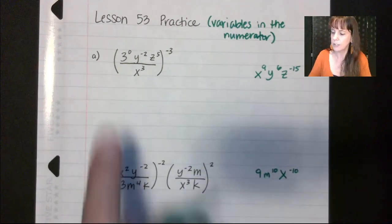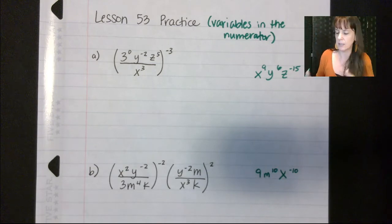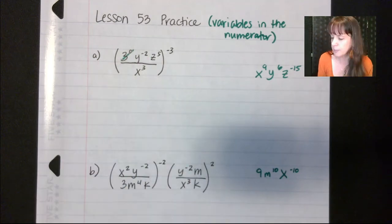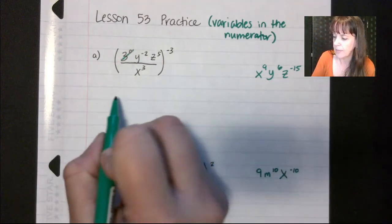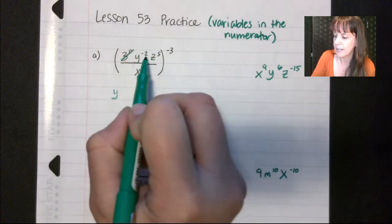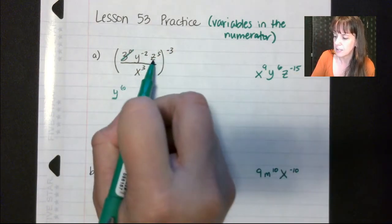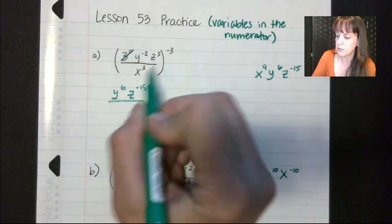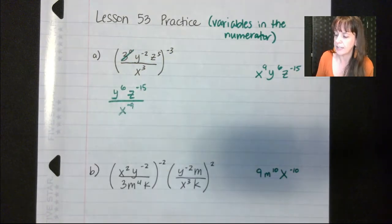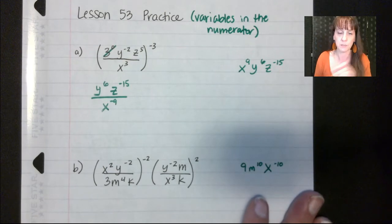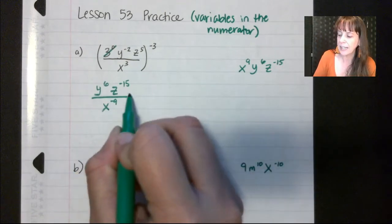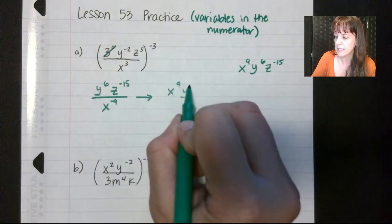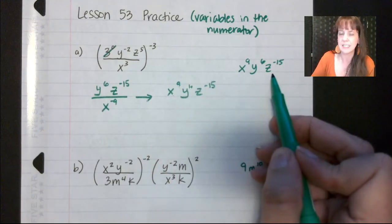Let's look at A first. Anything to the zero power is one, and anything times one is one — so I'm going to get rid of that term entirely. You could do negative three times zero if you wanted to, but you'll still get zero. Then I get y, and negative two times negative three is positive six — so y to the sixth. Z: five times negative three is negative fifteen. And don't forget to distribute downstairs — we get x to the negative nine. It's asking for variables in the numerator, so I bring x up, giving x to the positive nine. The final answer is x to the ninth, y to the sixth, z to the negative fifteen.